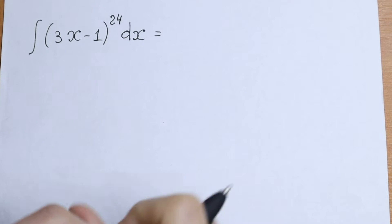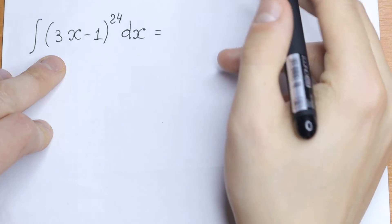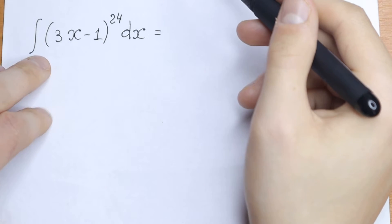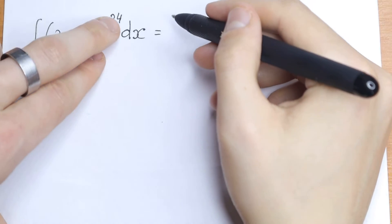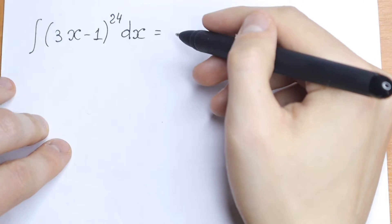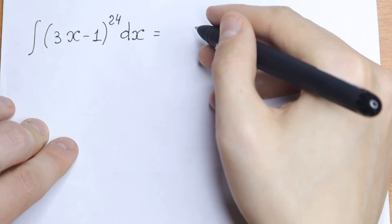Hello everyone, welcome back to higher mathematics. Today we have an interesting integral. We have integral of (3x-1) raised to the 24th power dx. How can we solve it?